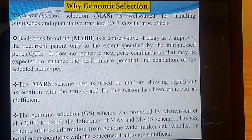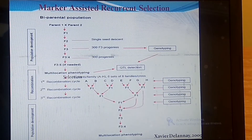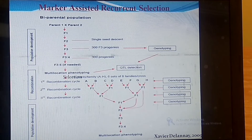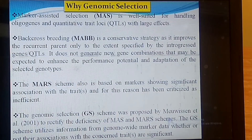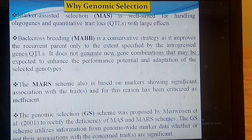The second technique is MARS — marker-assisted recurrent selection. In marker-assisted recurrent selection we use only those markers which show a significant association with the trait. We are not using those markers which show an insignificant association with the trait. This means we are using a smaller number of markers in MARS.